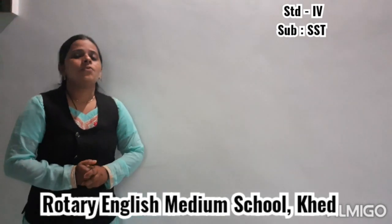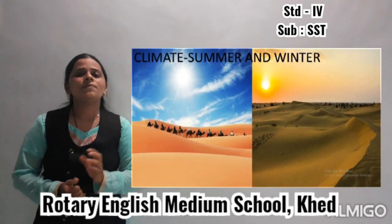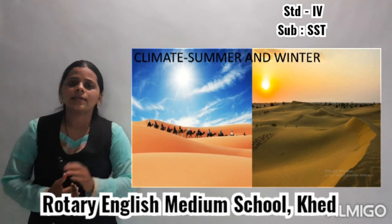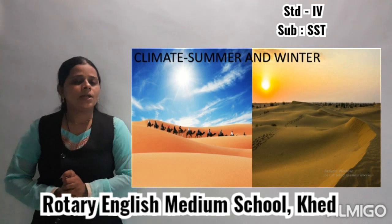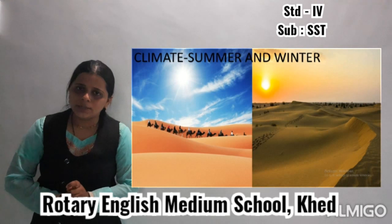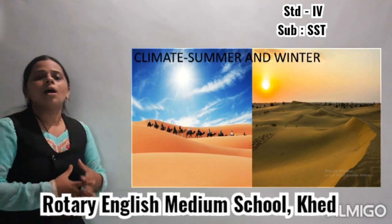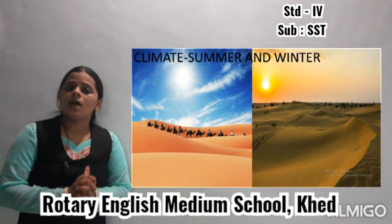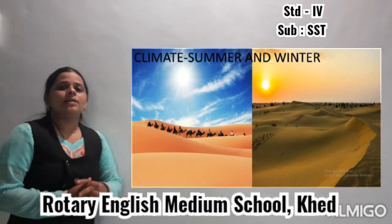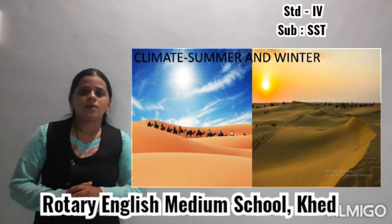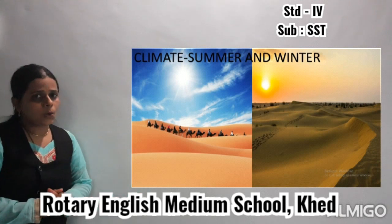And then after that, we discussed about the climate. So what did we discuss about the climate? How is the climate in the desert area? The climate remains hot and dry throughout the year. If we talk about the summer, the days are very hot and the nights are cold. And if we talk about the winter, the days are warm and the nights are very cold.